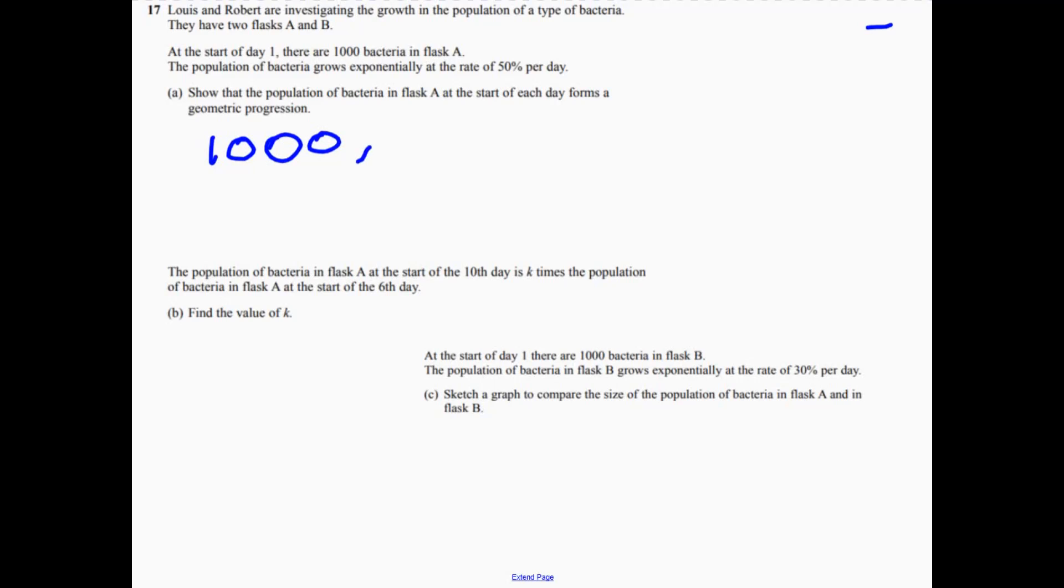So it increases by 50%. If something increases by 50%, the best way of doing that is it just multiplies by 1.5. So we've got 1,500. And then we increase by 50% again. And that's the definition of a geometric progression, because a geometric progression means it's multiplied by the same thing each time.